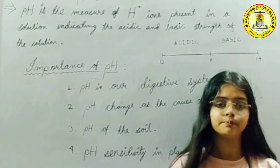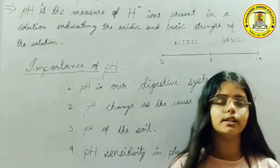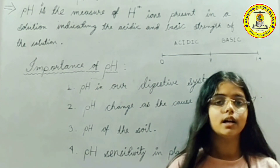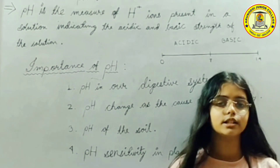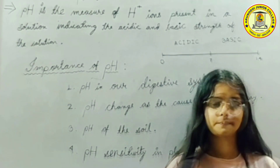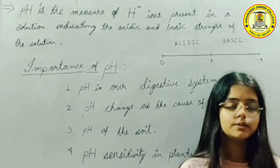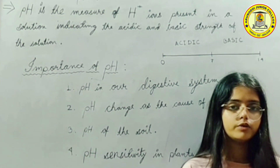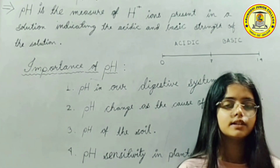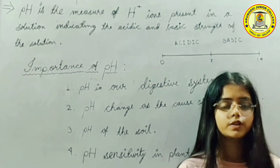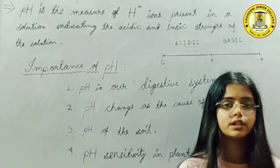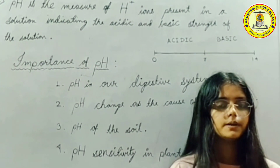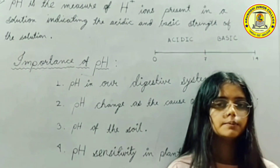Point number two: pH change as a cause of tooth decay. After eating food, bacteria present in our mouth produce acid, and the tooth enamel gets corroded when the pH of the acid drops below 5.5. Therefore, after eating we should use a basic solution like toothpaste. Point number three: pH of the soil. The pH of soil should be between 5 and 8. If it is below 5 it is acidic and if above 8 it is basic; in both cases plants cannot absorb the necessary nutrients from the soil.